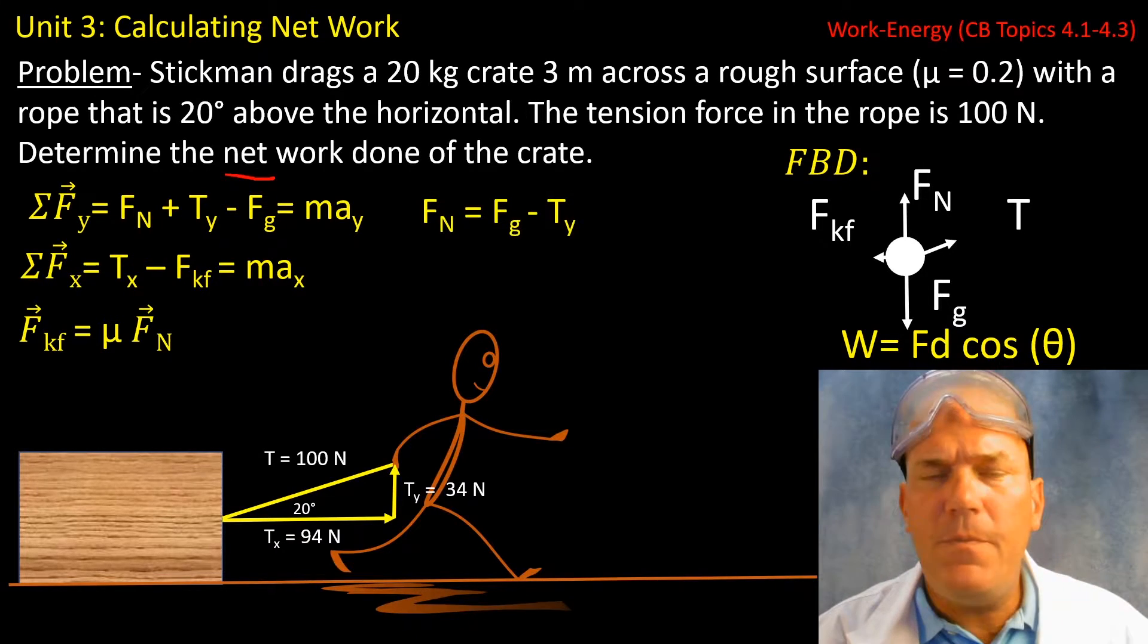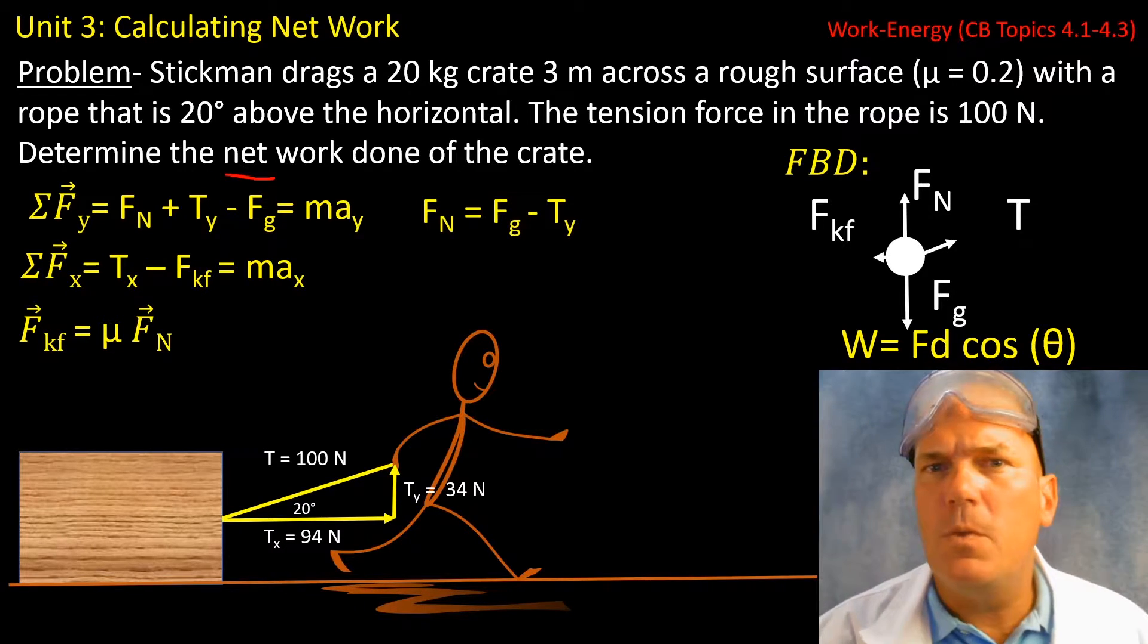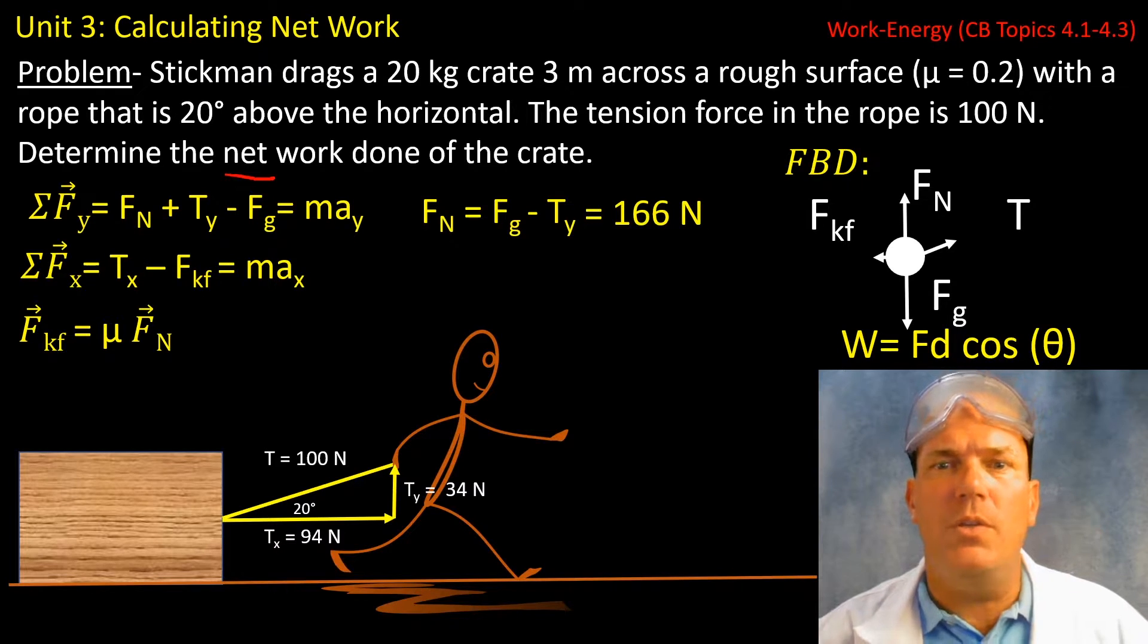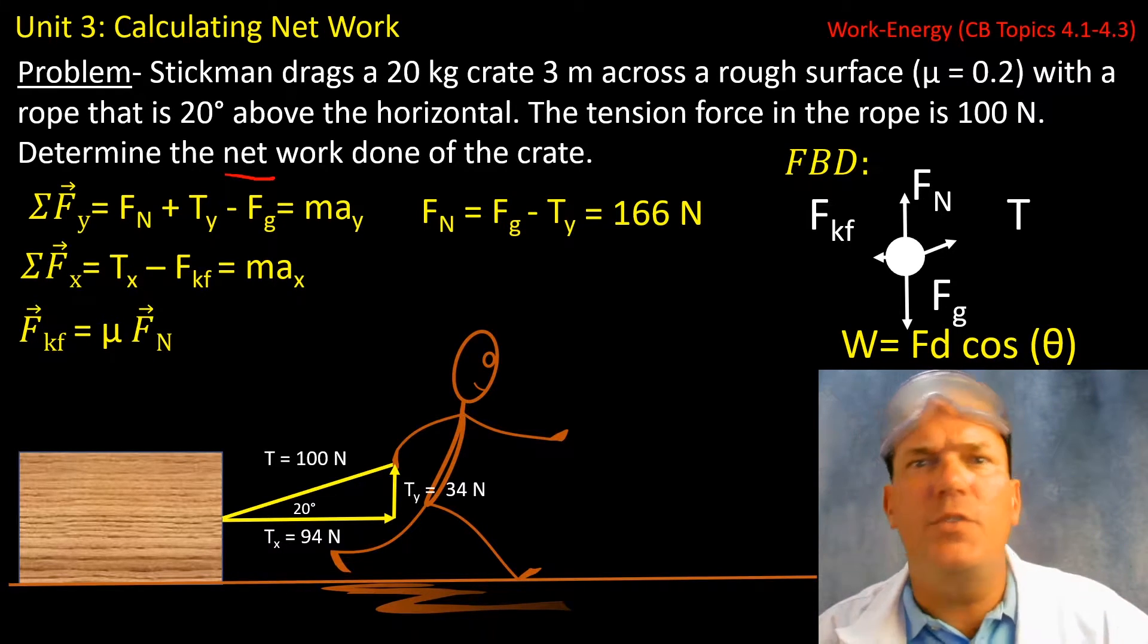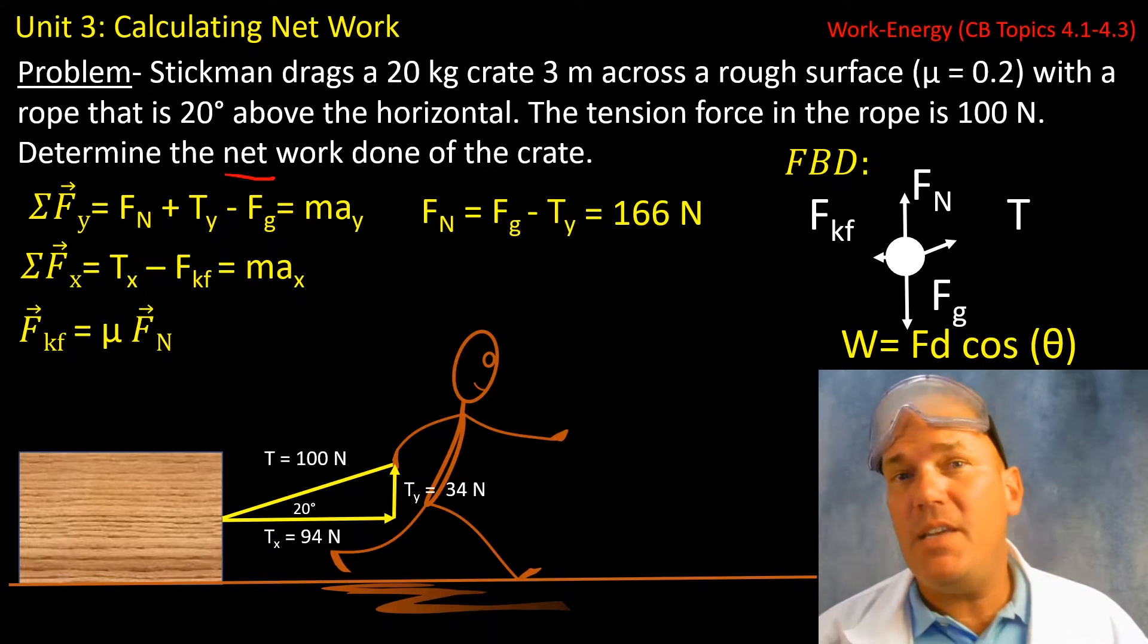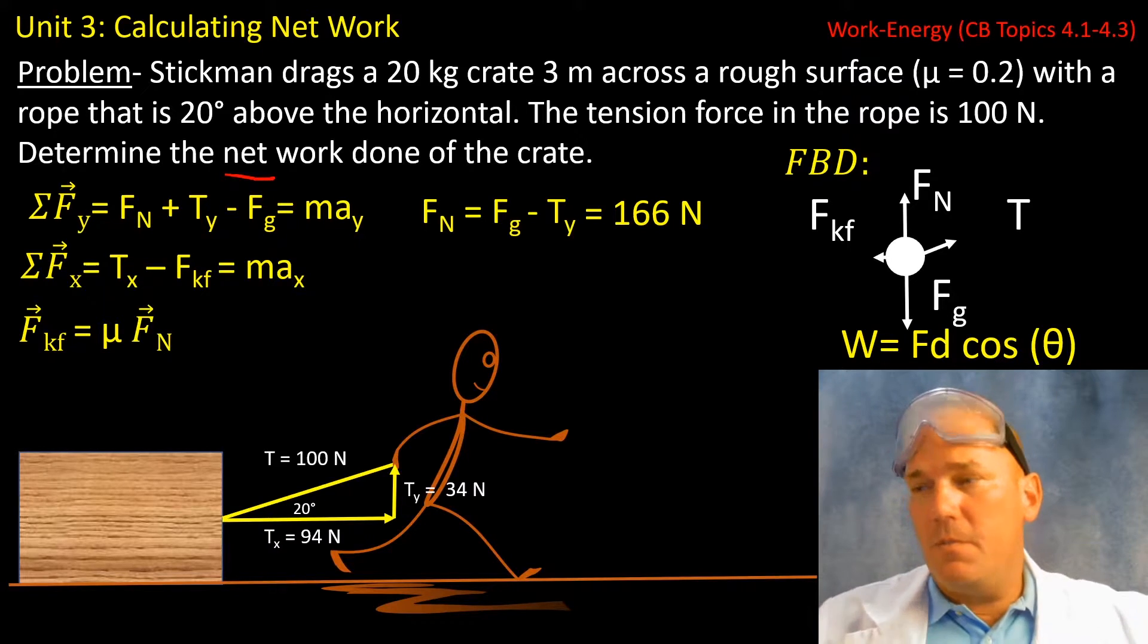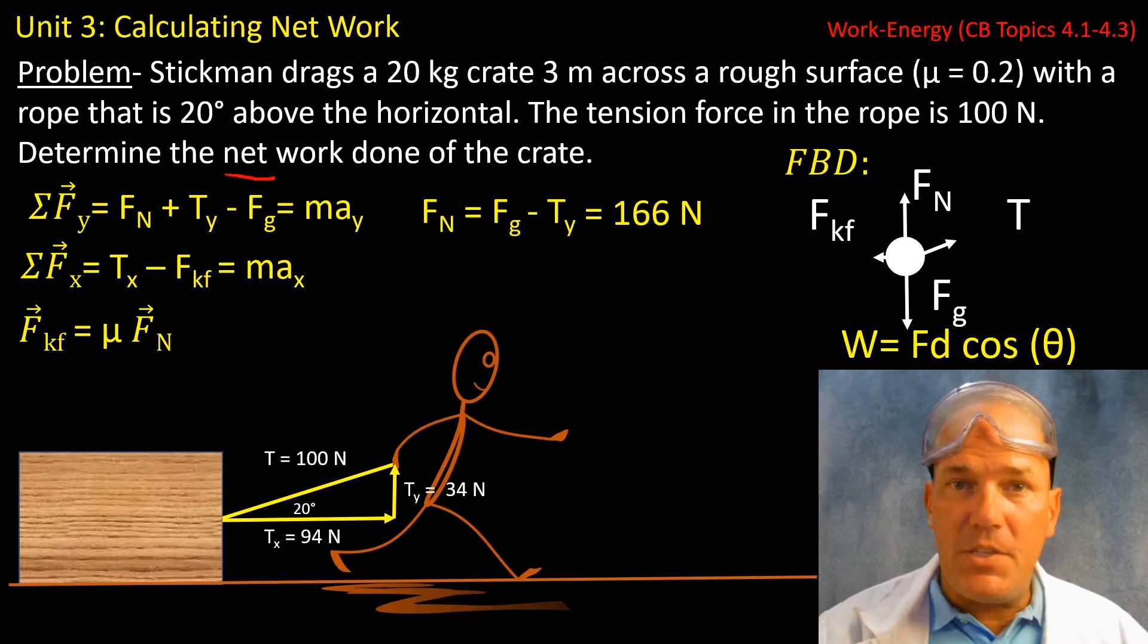So when we sum the forces and solve for force normal, we find out that force normal is less than 200 newtons. In fact, it's 166 newtons, which hopefully makes sense after my extensive review of force normal and friction.